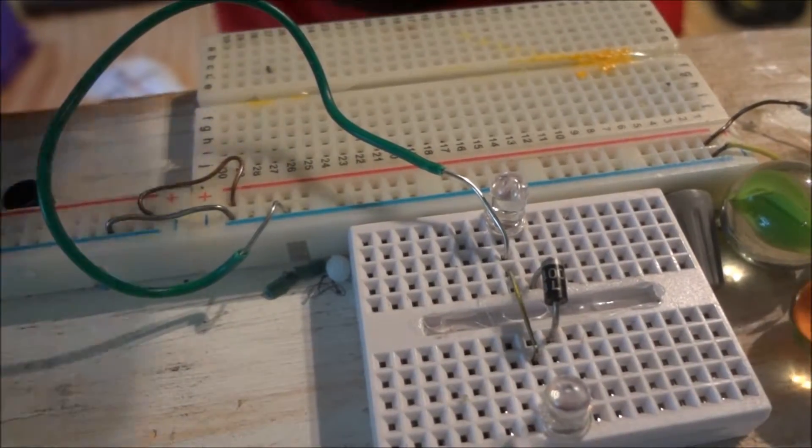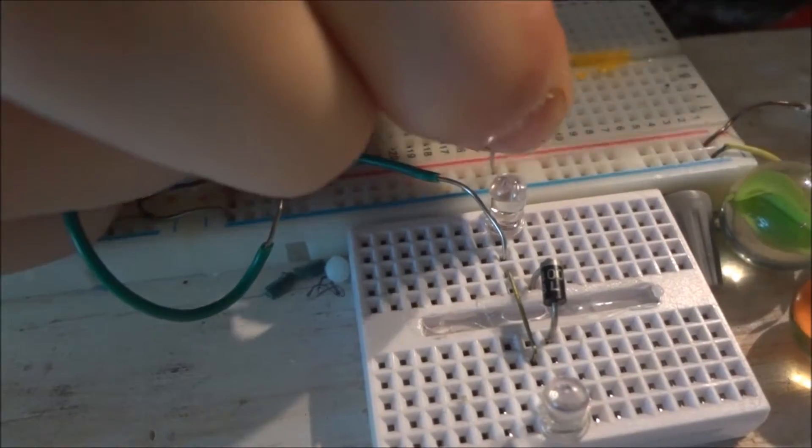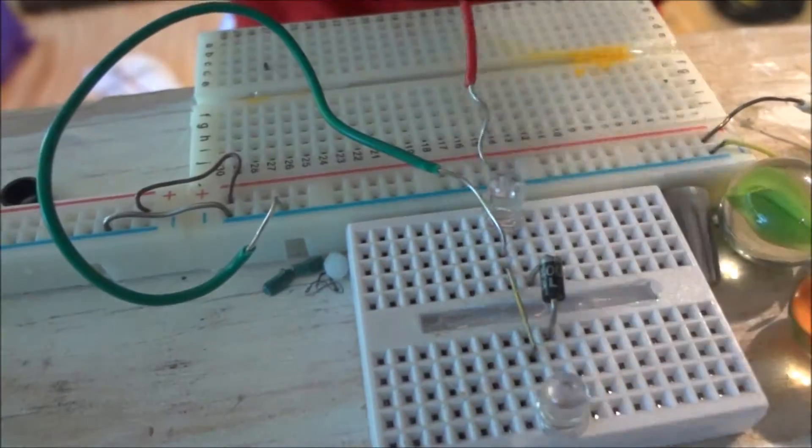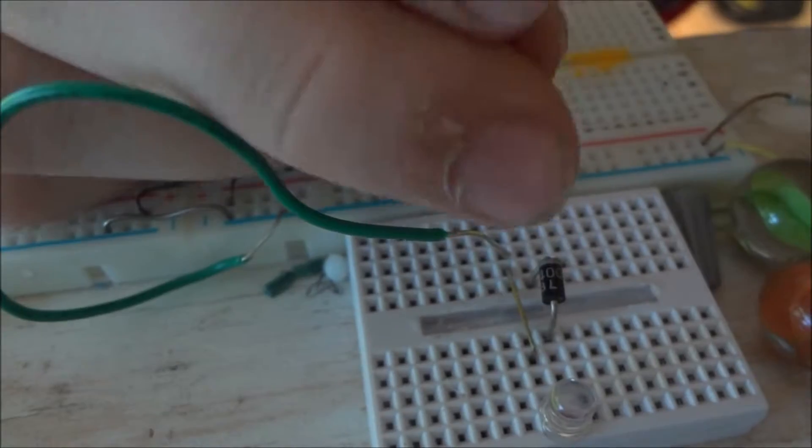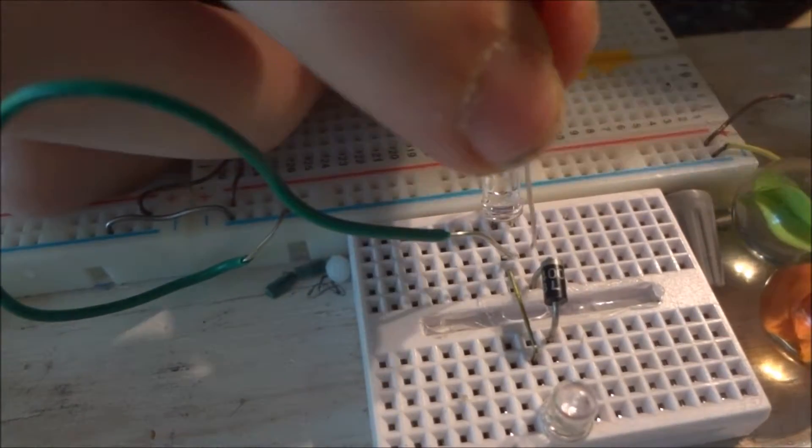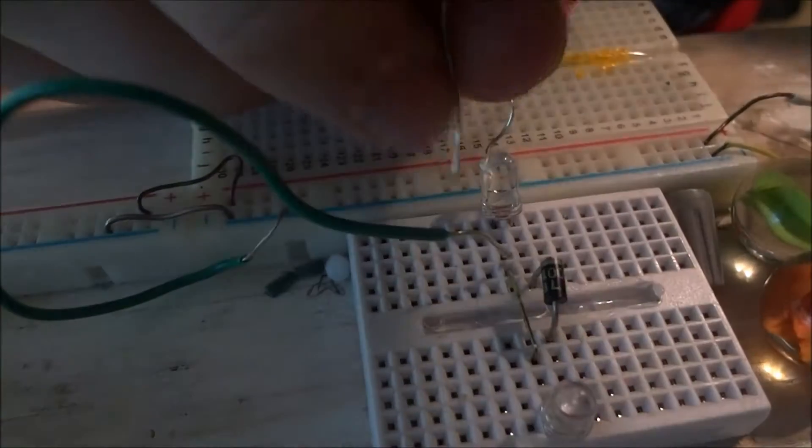I'm going to stick this in the power rail. This is on 3 volts. Now I'm going to stick the wire right here to the green LED. It lights.